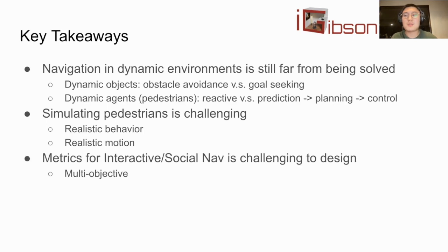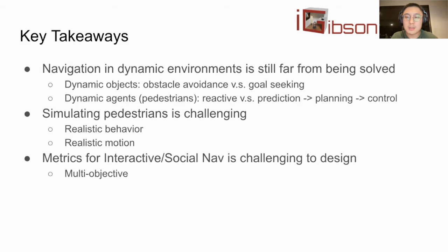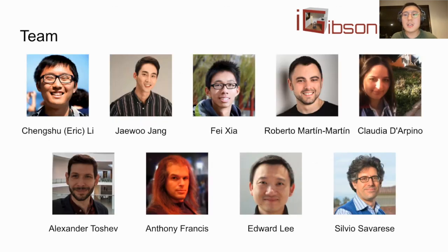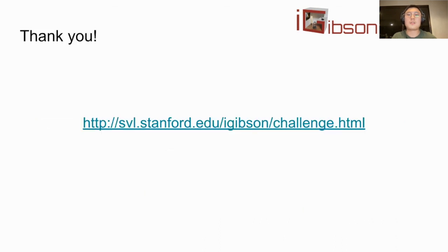Finally, designing metrics for interactive and social navigation is tough, mainly because in dynamic environments it is typically a multi-objective optimization problem. The robot should achieve the goal with the shortest path or minimal time, but also shouldn't destroy the house or harm humans. We made our first attempt at designing these metrics in the challenge, but we are still constantly thinking about what would be the best metrics for these dynamic scenarios. I would love to thank all my colleagues and co-organizers, and all participants for the time and effort they put into this challenge. We look forward to seeing you all next year. Thank you for your attention.